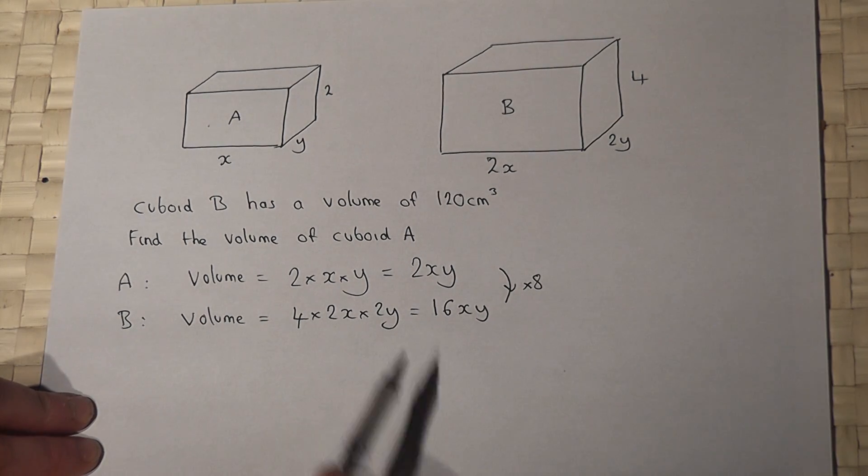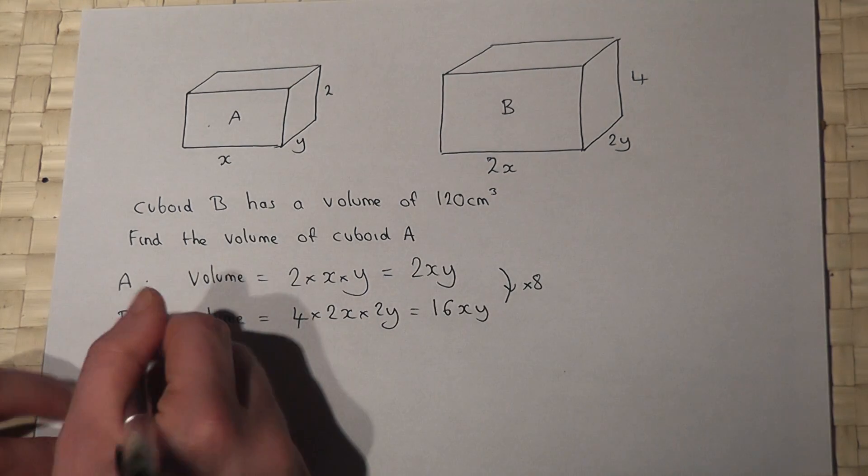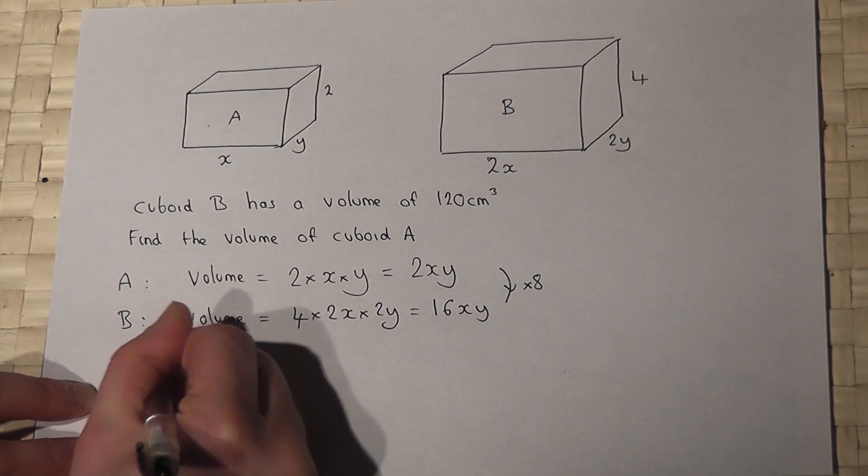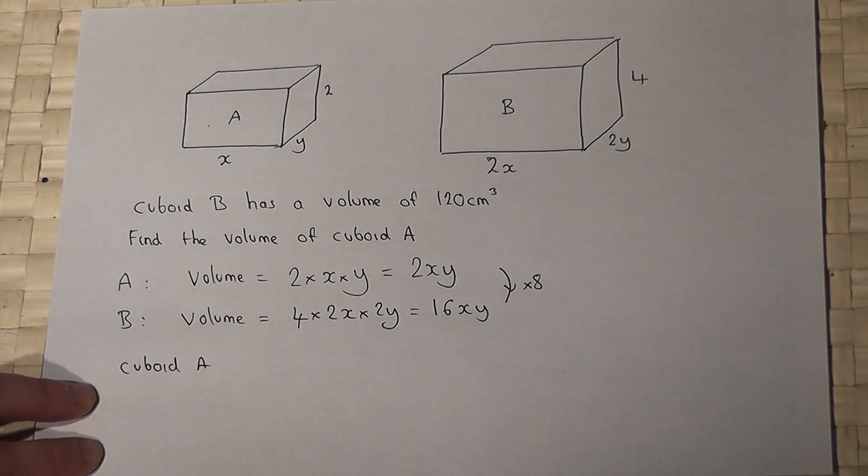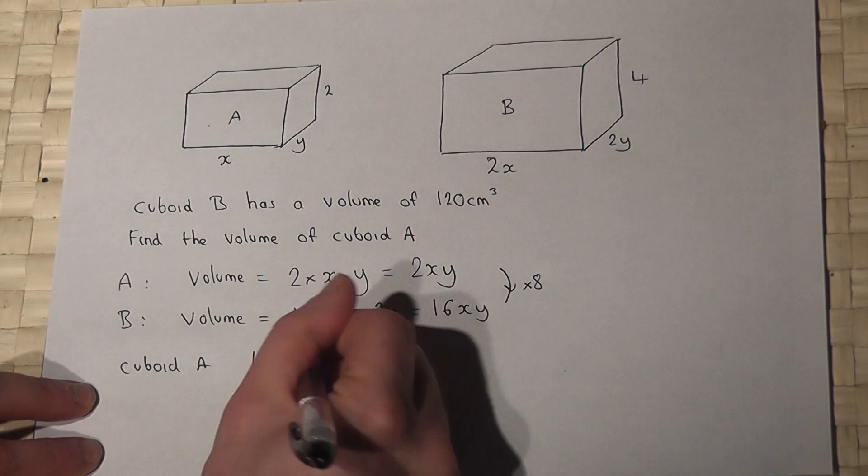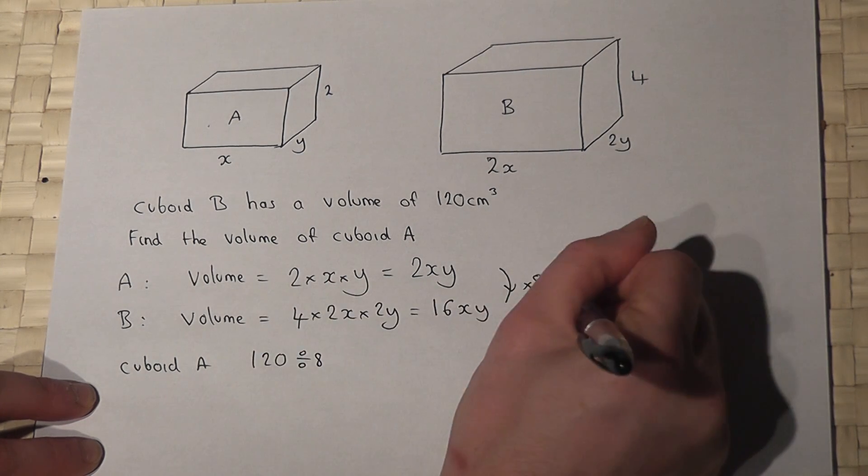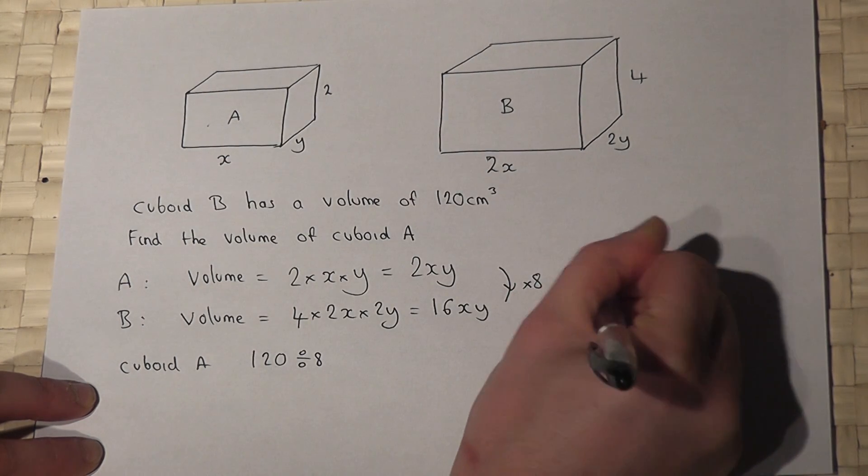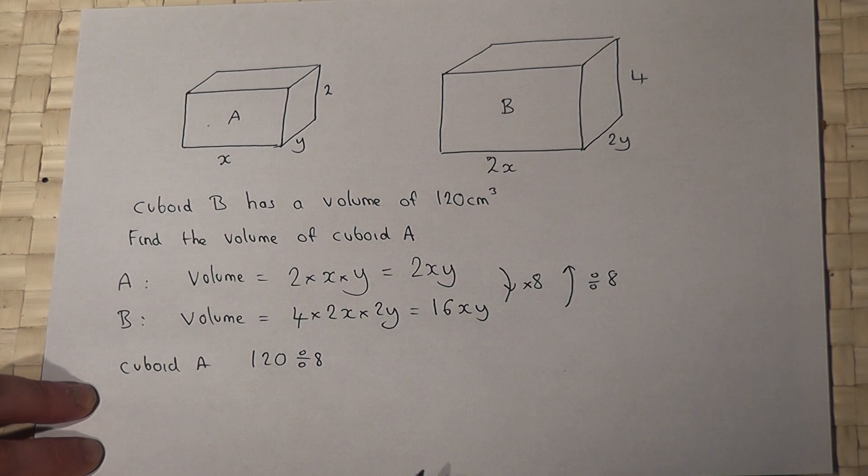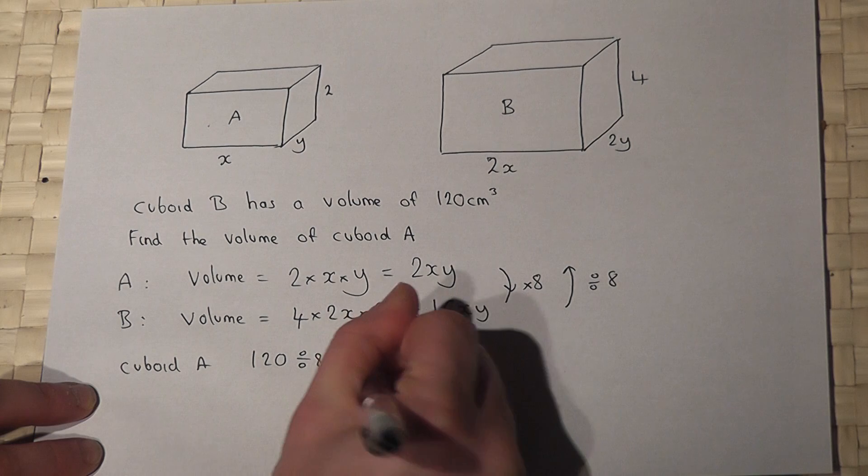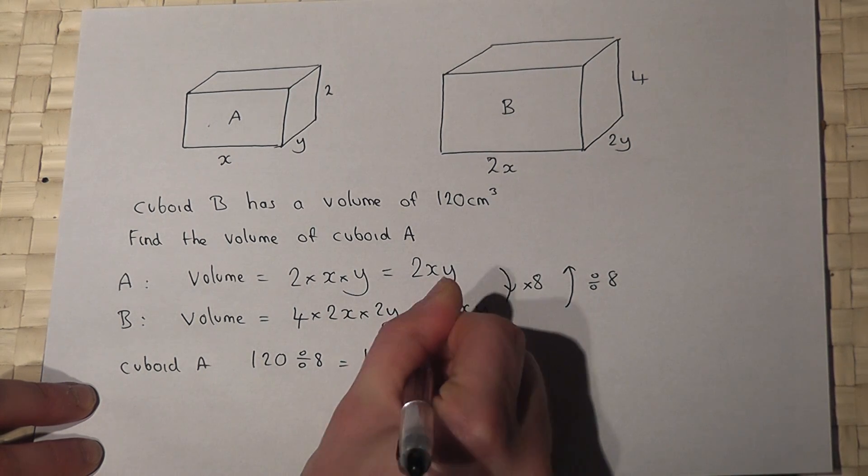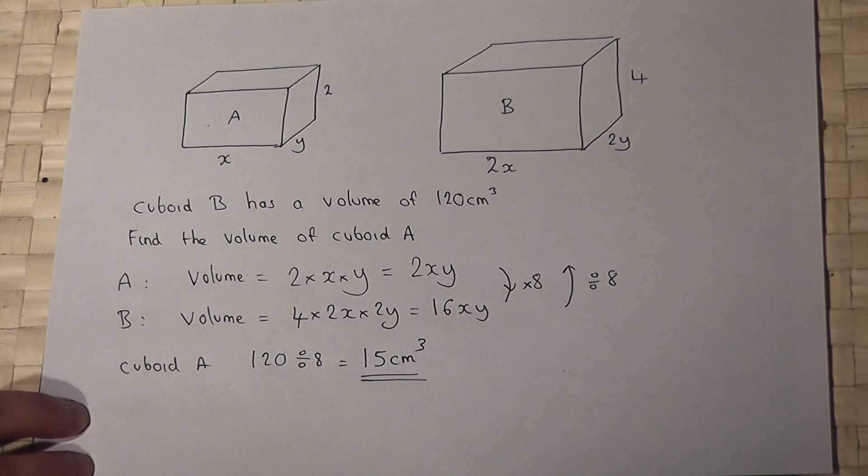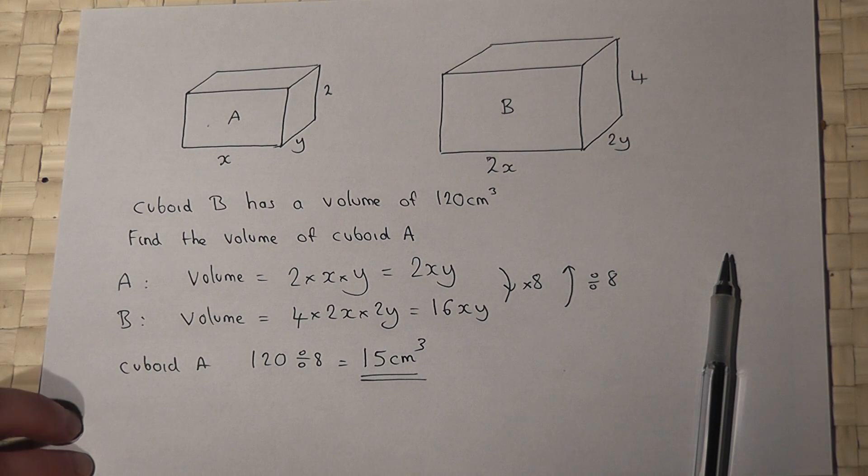If cuboid B has a volume of 120, then cuboid A has a volume of 120 divided by 8, because we're going back to cuboid A. 120 divided by 8 is 15 centimeters cubed. So cuboid A has a volume of 15 centimeters cubed.